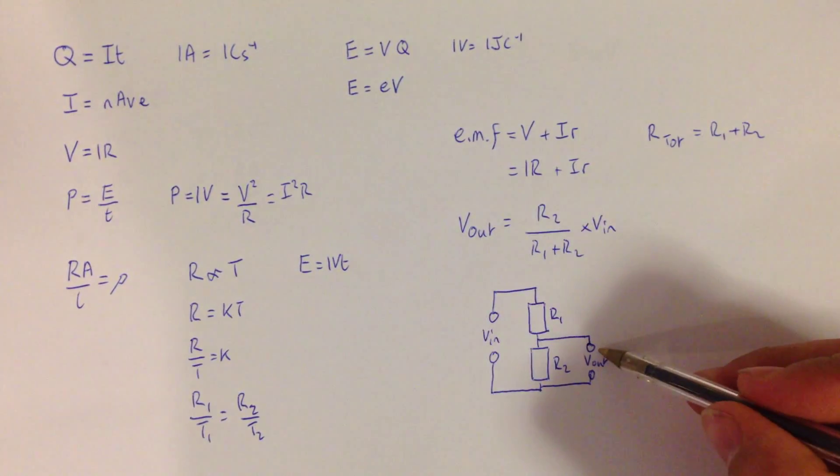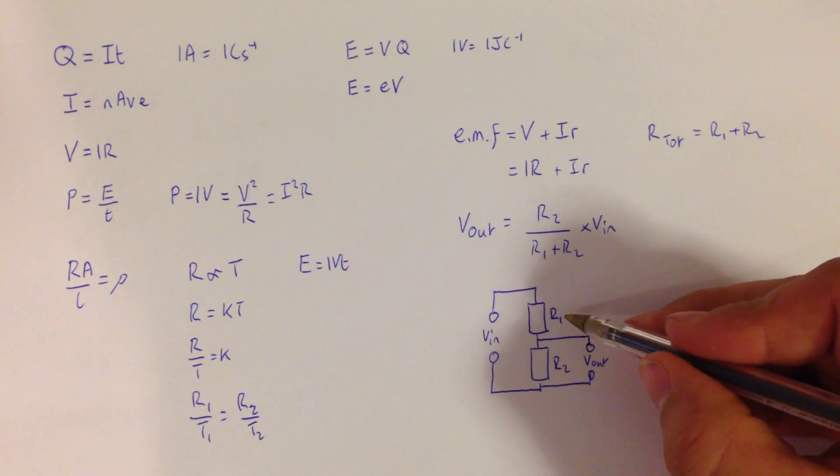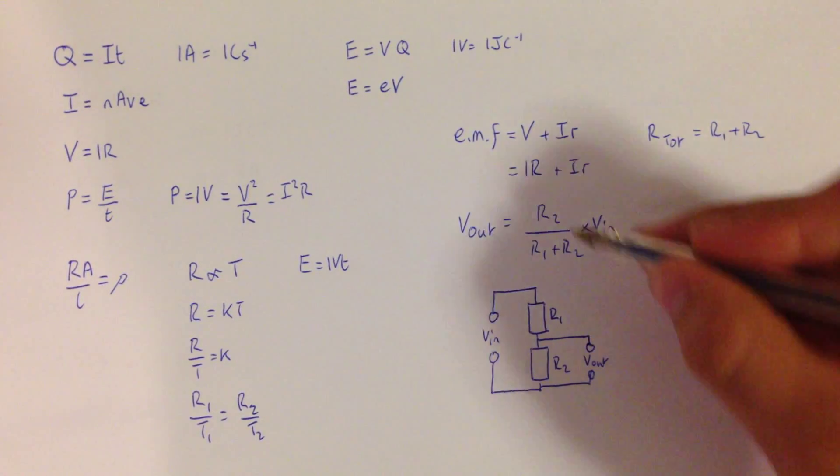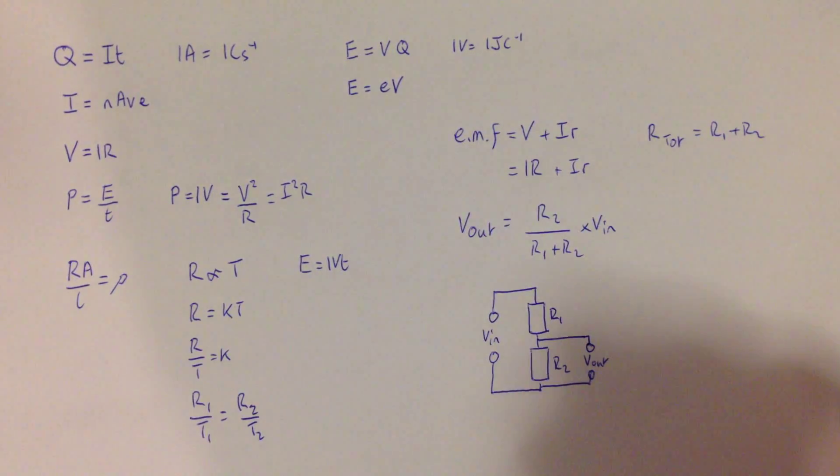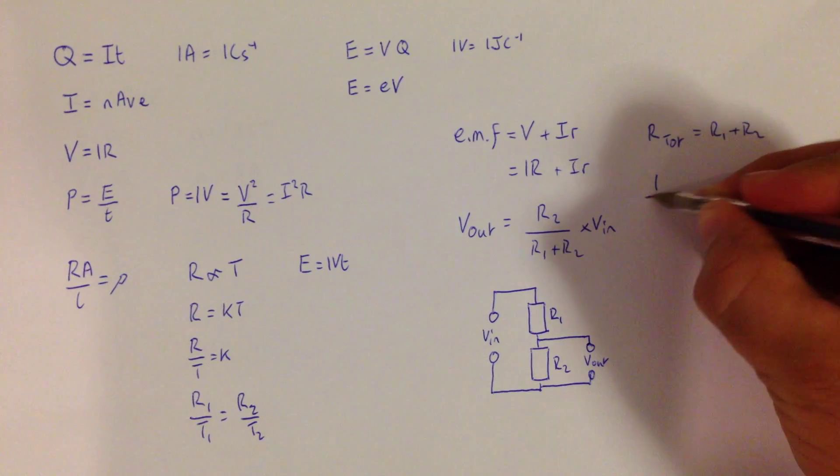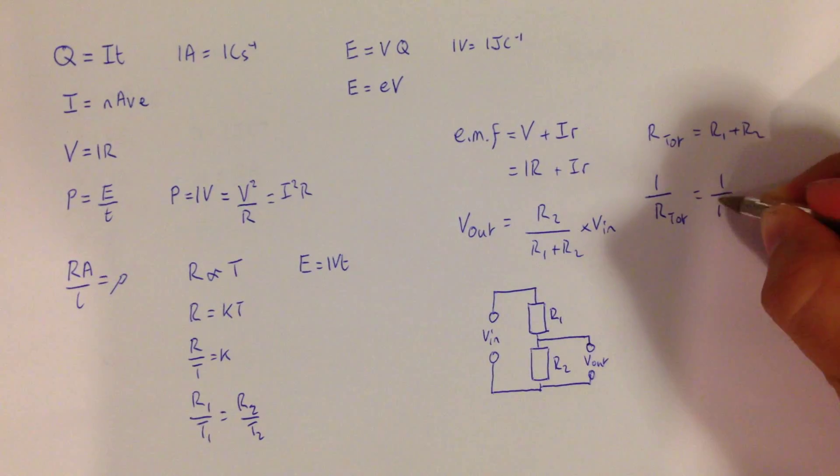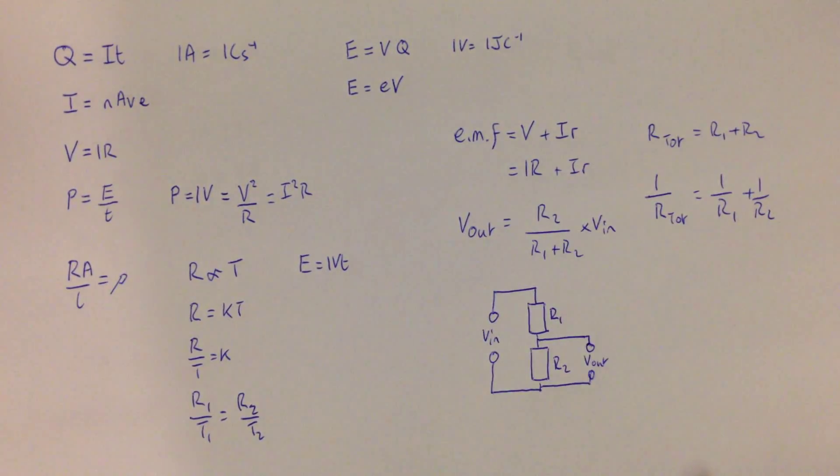So this equation provides us with the potential difference over R2. So if I wanted an expression for the potential difference over R1, I would put R1 at the top of the equation. The final equation for electricity is 1 over R is equal to 1 over R1 plus 1 over R2, and this is the equation for resistors in parallel.